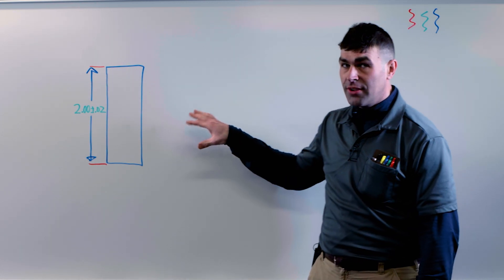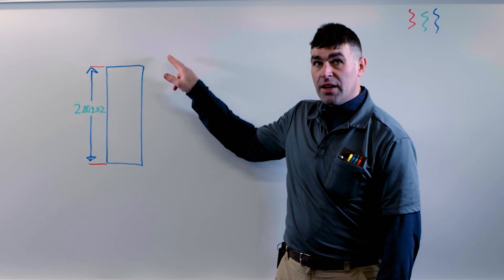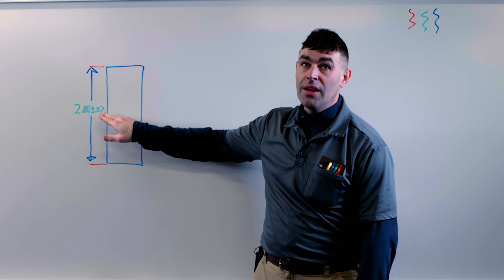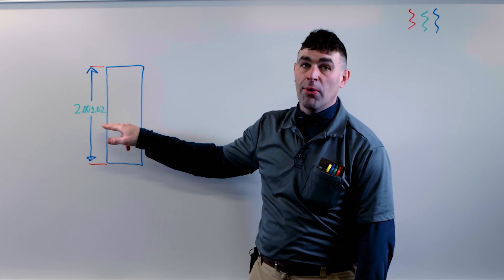So I want to posit a situation. We've got a requirement. We need a block or distance between these two planes that is two inches with a maximum of 2.02 and a minimum of 1.98.